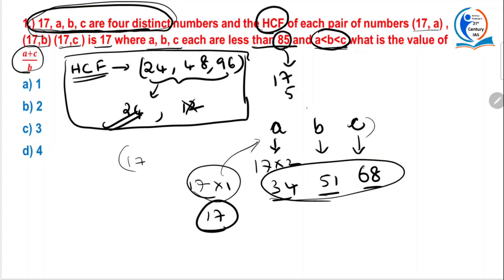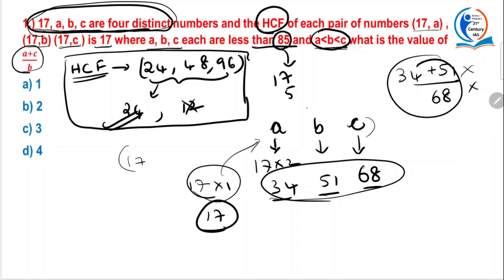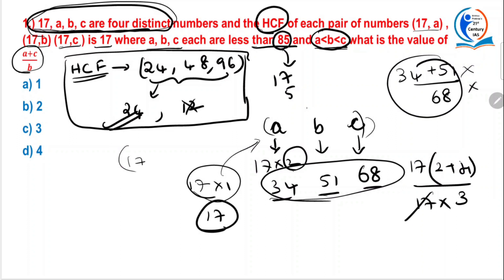Now what is the value of A plus C by B? 34 plus 51 by 68 is what we usually write, but do not write like this. Easy method: take 17 common. You get 17(2+4) / 17×3. 17 and 17 cancel. Now 6 by 3 is 2. 2 is the answer.